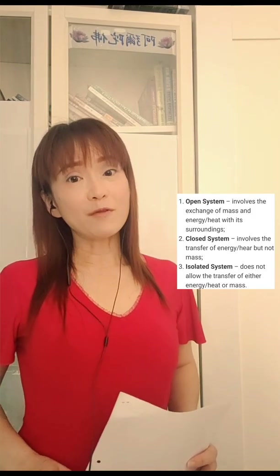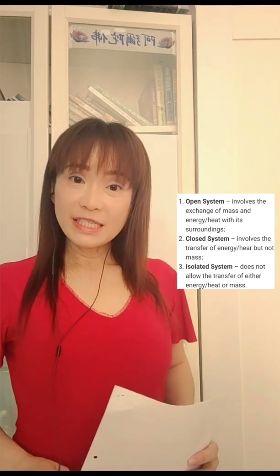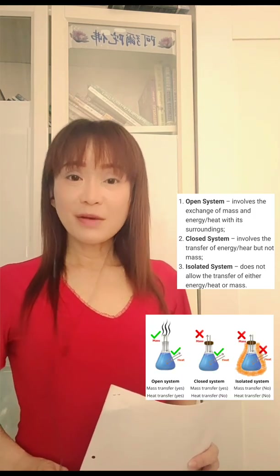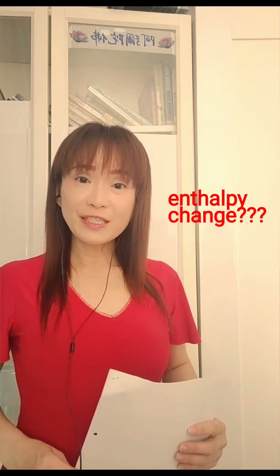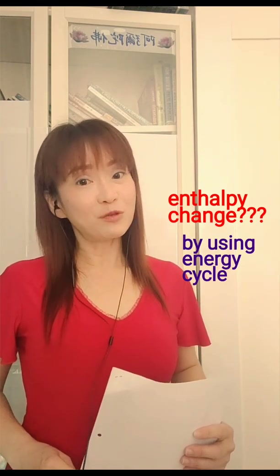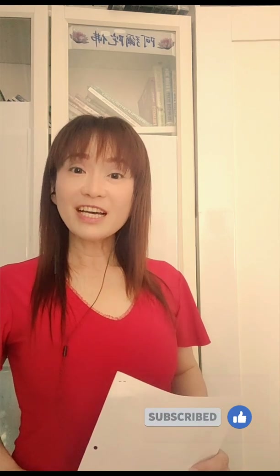There are three types of systems: open system, closed system, and isolated system. For STPM students, you should be able to define Hess's Law and calculate the enthalpy change of reactions by using the energy cycle. Our discussion today will be focused on how to calculate the enthalpy change of reactions using energy cycles. Now let's look at the first part — definitions of Hess's Law.